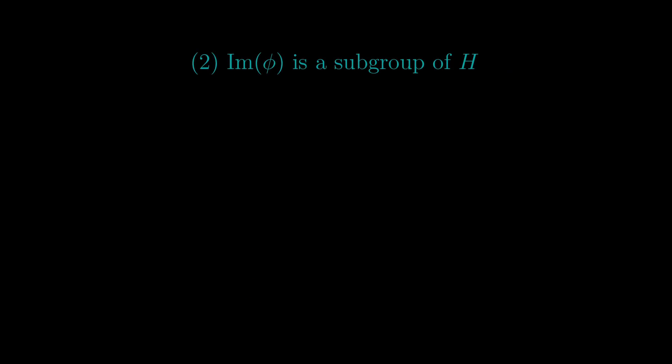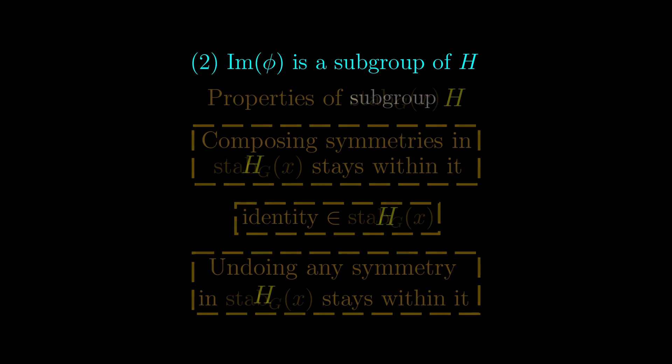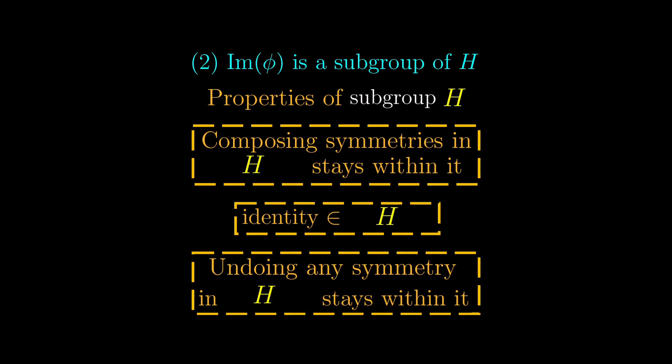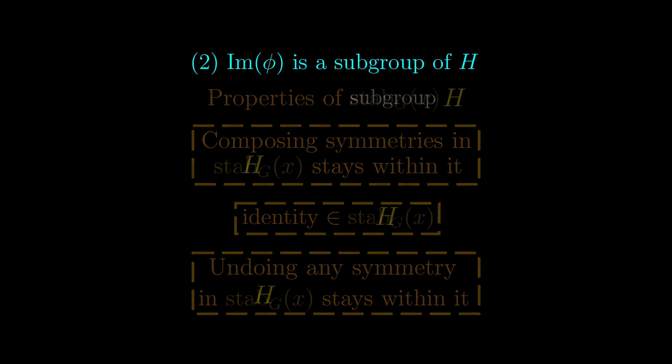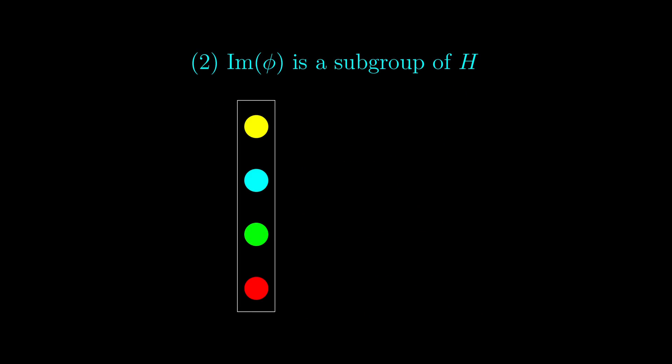If we really need to prove the second statement here, we will need the subgroup checklist. However, we can use the type of thinking as before. The whole group G is mapped to the image by definition of the image. So the image acts like the entire group G itself. Of course, the image is a subset of the group H, and because it is a group, it is a subgroup of the entire group H.